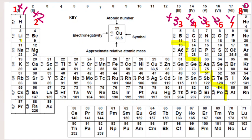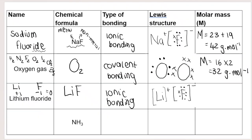To work out the molar mass of lithium fluoride: lithium is 7 and fluoride is 19. There's just one Li and one F, so 7 plus 19 equals 26 grams per mole.